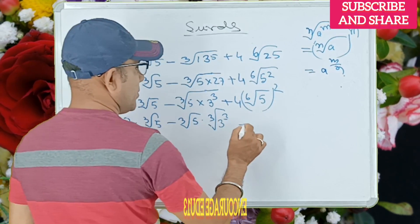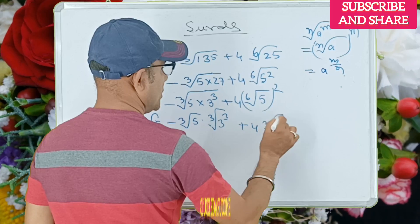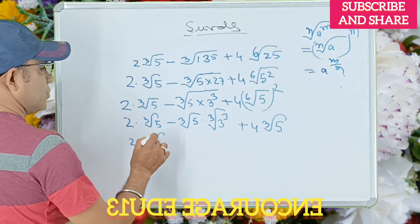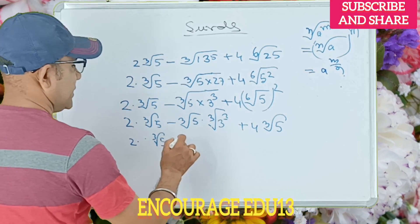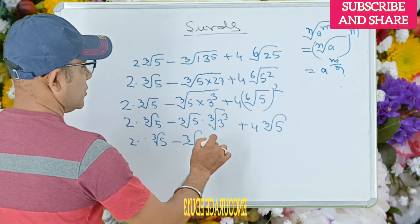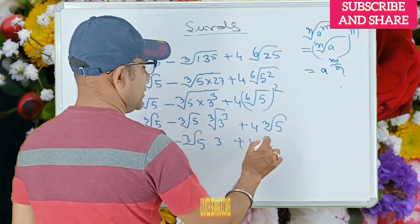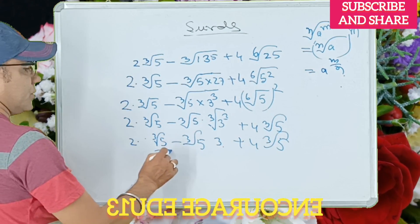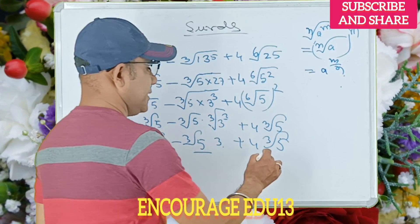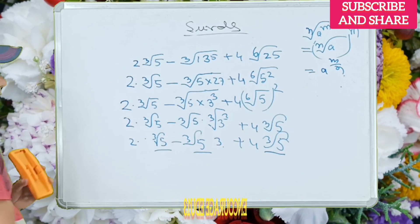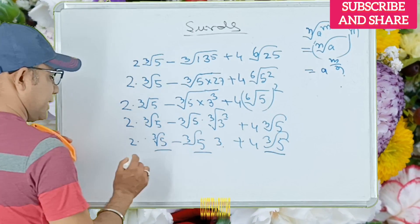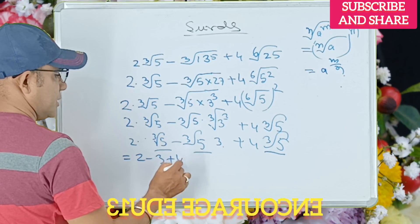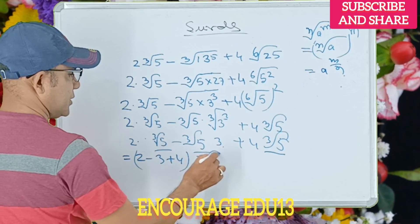Plus 4 cube root of 5, 2.3 cube root of 5 minus cube root of 5, equals 3 plus 4 cube root of 5. We collect like radical terms: 2 minus 3 plus 4, and combine them as shown in the previous video.